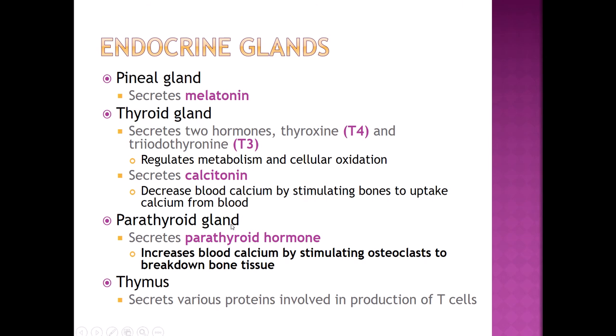The parathyroid gland makes one hormone — parathyroid hormone — which increases blood calcium. It activates osteoclast bone cells, which are essentially little bone-eating cells that break down bone tissue and release calcium back into the blood. The thymus produces several different hormones and proteins, all related to the development of our T lymphocytes.